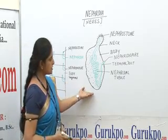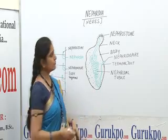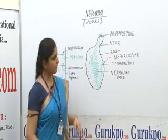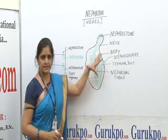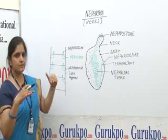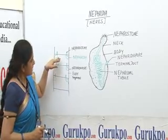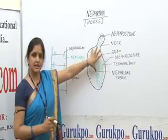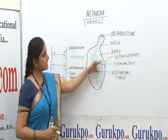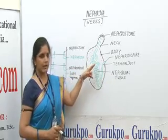Looking at the structure of the Nephridia, this is one Nephridium and it has two parts: one part is the body and the second part is the neck. The body is the large part, which lies transversely in the ventrolateral region of the segment. The body consists of a syncytial mass of connective tissue, and inside this connective tissue there is a coiled Nephridial tubule.